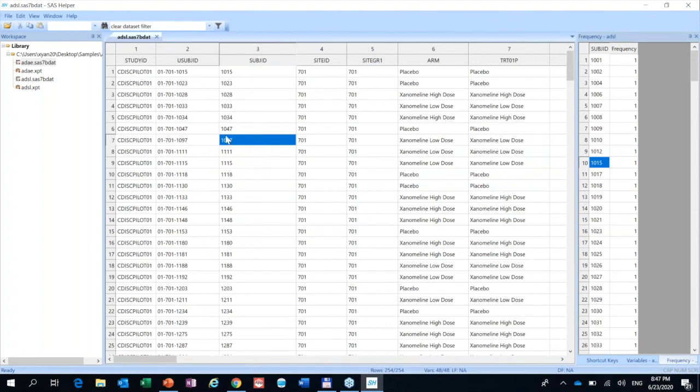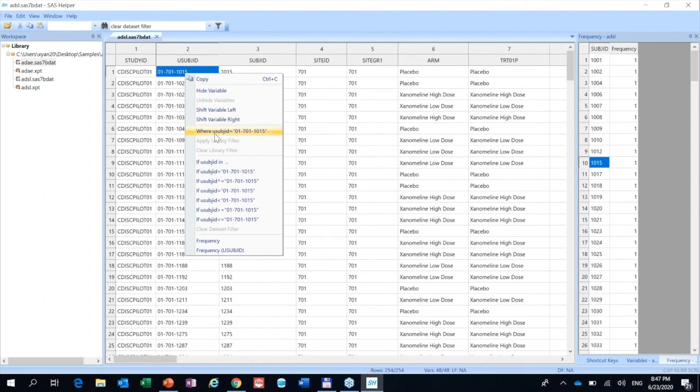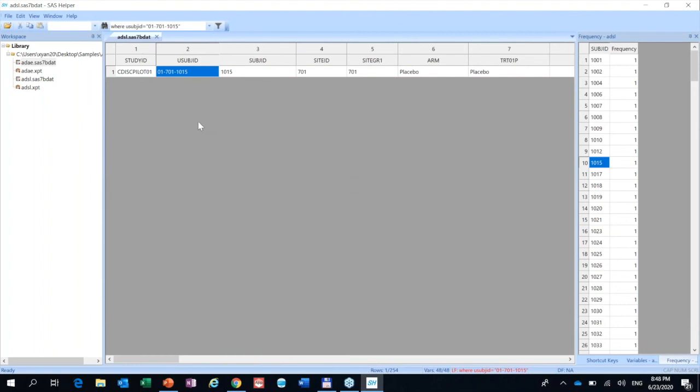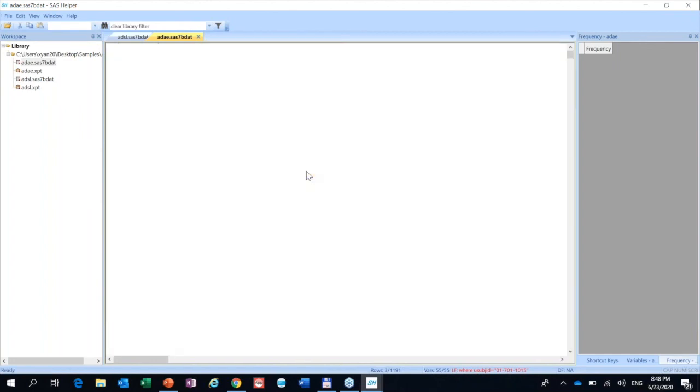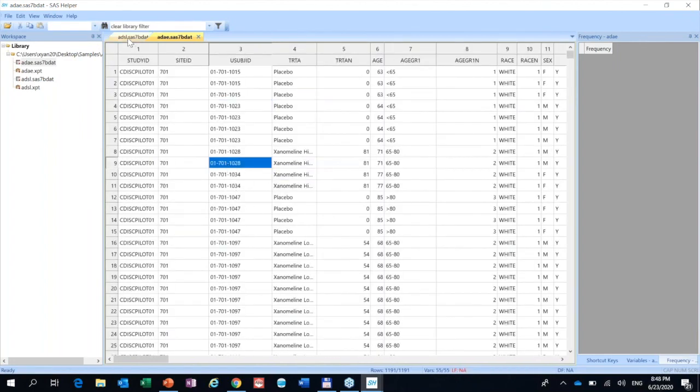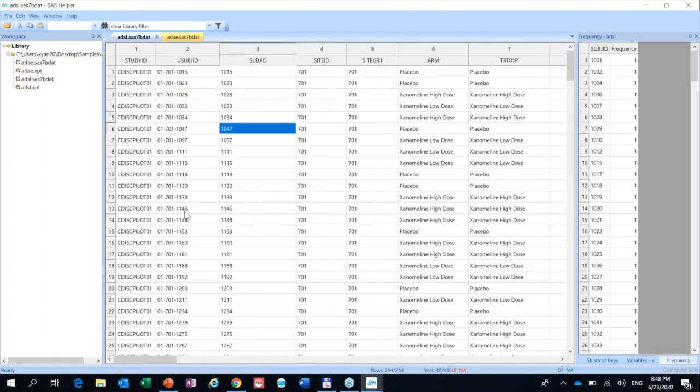Then I will talk about the library filter. Take this one as an example. If we want to set a library filter, right click. We use the where statement. Where. Click. Now we set a library filter. And at the bottom, you can see LF, library filter. It is in red color. Let's try to open ADAE again. Now you can see this one, only this subject. We can clear the library filter. Once you clear it, if you go to ADSL, you will find all will be shown.